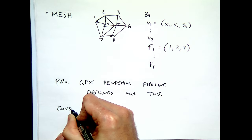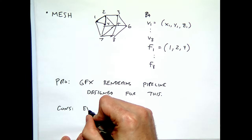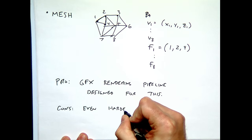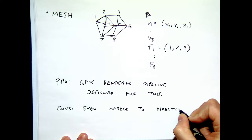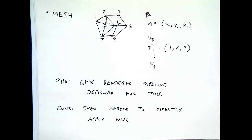The cons of meshes are that it's even harder to make them work with neural networks. It's harder to directly apply standard neural networks because the underlying representation is complicated — you've got a list of vertices and another list of faces, and those two lists are different. We have the same issue of permutations. There are ways of doing it — for example, graph neural networks treat this as a graph on a 3D point cloud. But as we'll talk about next time, most generative 3D algorithms are not operating on meshes.